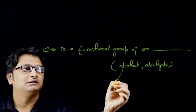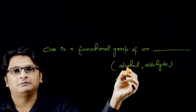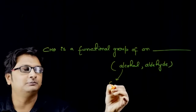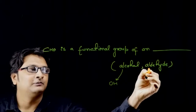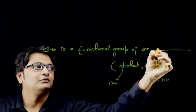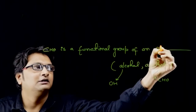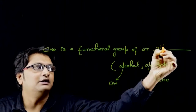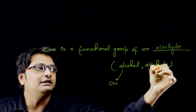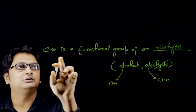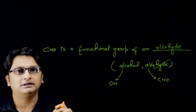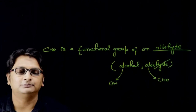The formula of alcohol's functional group is OH, while that of aldehyde is CHO. So the correct option here will be aldehyde — this one. CHO is a functional group of an aldehyde. Thank you.